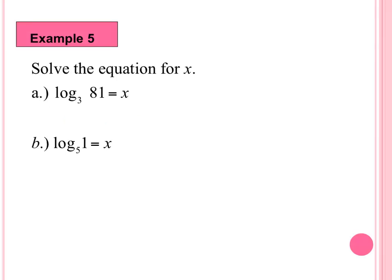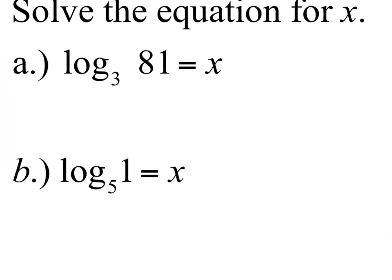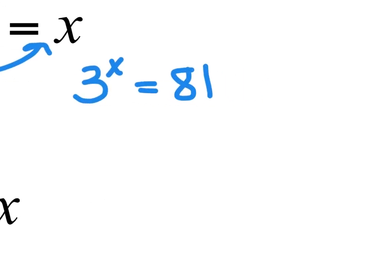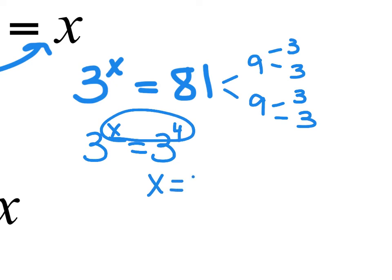Example 5 says solve the equation for X. I'm going to convert this into exponential notation — 3 comes over and picks up the X, drops off, leaving 81. So 3 to the X equals 81. Mental math: 3 to what power equals 81? 81 is 9 times 9, which is 3 times 3 times 3 times 3 — that's four 3's. So 3 to the X equals 3 to the 4th, and the one-to-one property tells me X equals 4.